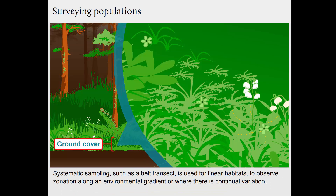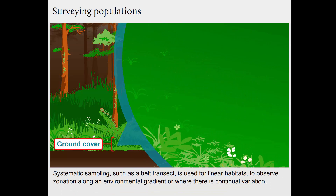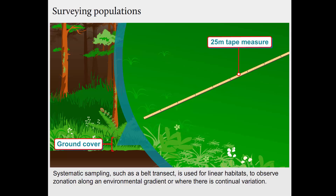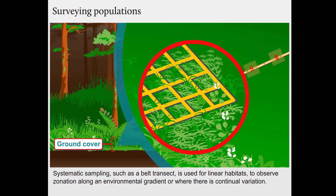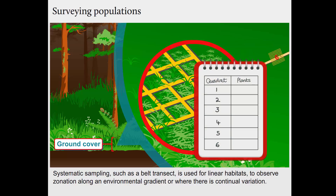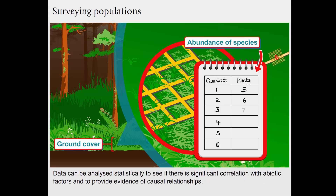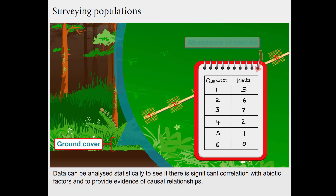Systematic sampling, such as a belt transect, is used for linear habitats, to observe zonation along an environmental gradient, or where there is continual variation. Data can be analysed statistically to see if there is significant correlation with abiotic factors, and to provide evidence of causal relationships.